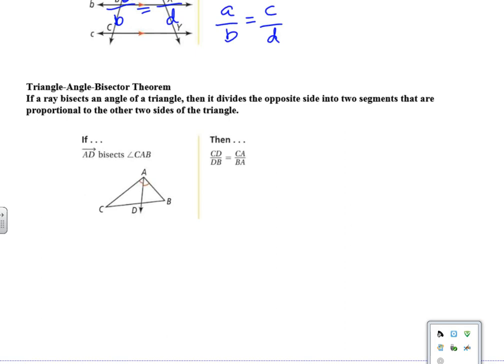Alright, so then the last one is the triangle angle bisector theorem. Boy, that's a mouthful. Triangle angle bisector theorem, and it says if a ray bisects an angle of the triangle, then it divides the opposite side into two segments that are proportional to the other two sides of the triangle. So you'll notice here if AD bisects angle CAB and we see those little tick marks, then here again this is how I think about this. I just mark these lengths and it's that kind of proportion, so A over B equals C over D, and in all of these, A, B, C, and D represent those lengths that we have.